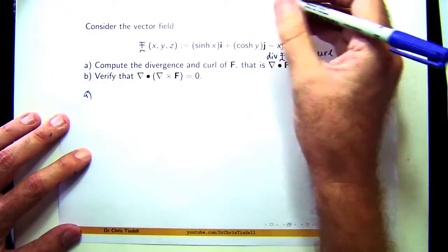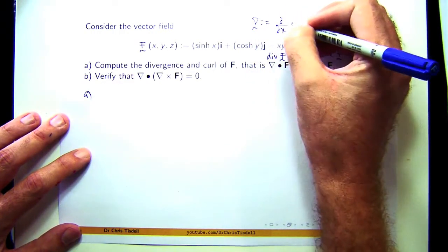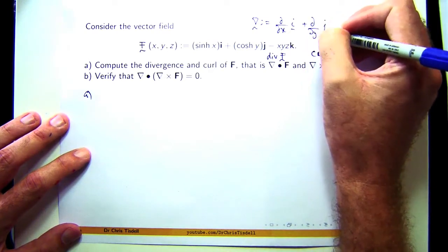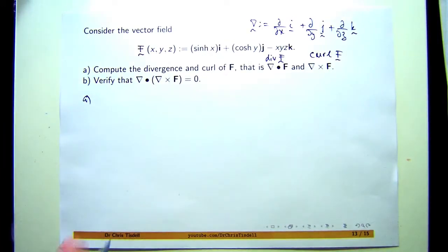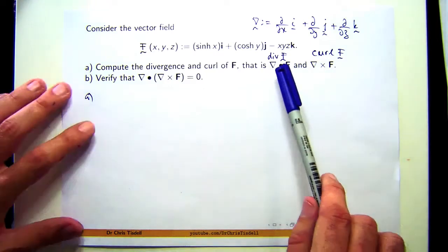This funny little triangle is just an operator that involves partial derivatives. It's called nabla, upside down triangle. Writing it this way with the dots and the crosses tells you actually how to compute it. Let's talk about this first.